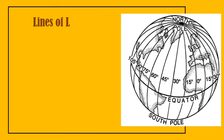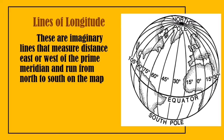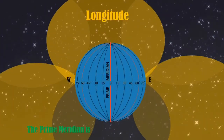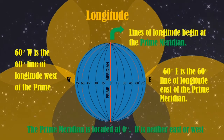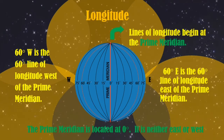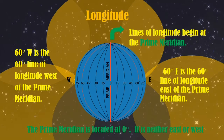Now we have the lines of longitude. These are also imaginary lines that measure distance east or west of the prime meridian and run from north to south on the map. These are lines that connect at the north and south poles, and they are also called meridians. As you can see on the slide, the prime meridian is located at zero degrees — it is neither east nor west — and divides the earth into the eastern hemisphere and the western hemisphere.